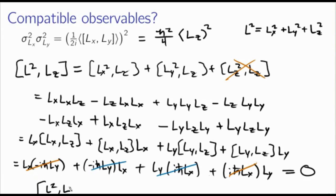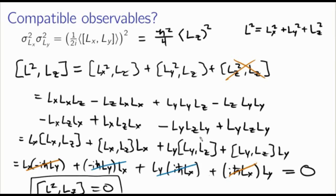This is the result we hoped for. It means there's no generalized uncertainty relation between Lz and L², so I can simultaneously determine both L² and Lz. That means I can hope to find states that are simultaneous eigenstates of both L² and Lz — and that's really what we want. Eigenstates are especially easy to work with. So we've worked out the general algebraic properties of angular momentum operators and settled on working with L² and Lz.